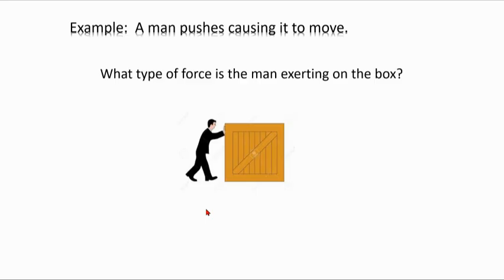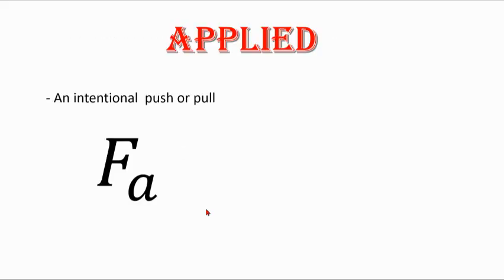Now look at this example for our other two forces that we haven't talked about yet. A man is causing this box to move. So obviously he's exerting a force on the box. What type of force is this? Well, we would call this an applied force. An applied force is used for an intentional push or pull. So like if you push something, you open a door, you kick something, when one object purposely goes and exerts a force on another, we call this an applied force.